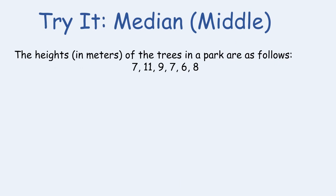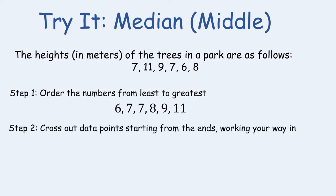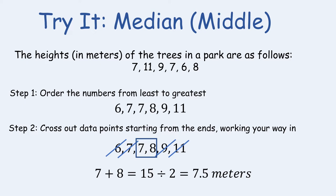Let's find the median using the same tree heights: seven, eleven, nine, seven, six, and eight. First, order the numbers from least to greatest — on your screen you'll see them ordered starting with six up to eleven. Next, cross out data points from the ends working inward: cross out six and eleven, then seven and nine, and you're left with two numbers in the middle. The number exactly in the middle of seven and eight, or their average, gives a median of 7.5 meters.